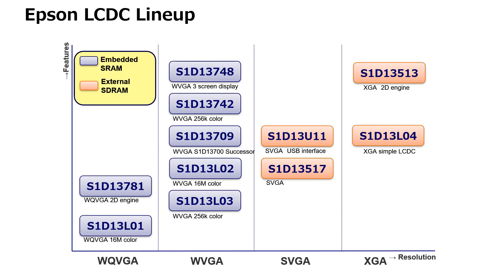Epson's LCD lineup features LCD controllers suitable for a wide variety of applications. Display resolution support ranges from small panels under QVGA to XGA panels. Epson produces two types of LCD controller: embedded SRAM, which is typically used for wide VGA or smaller displays, and external SDRAM, which allows memory sizes to support larger panels.